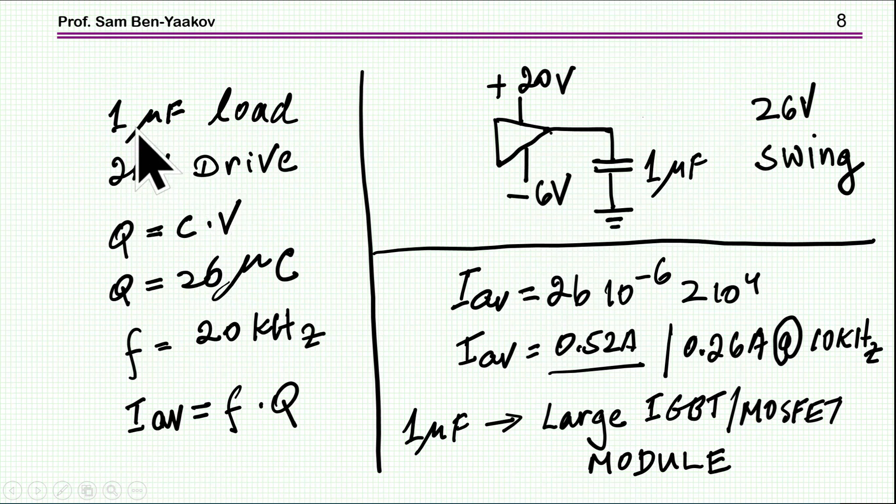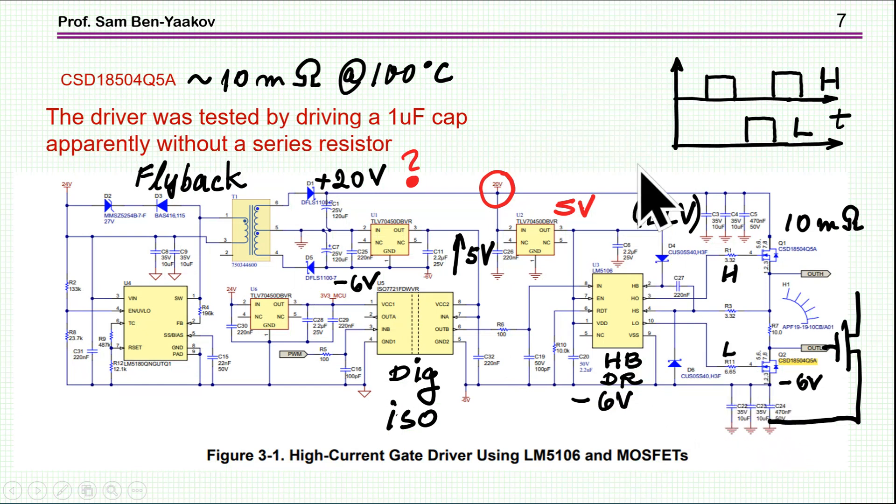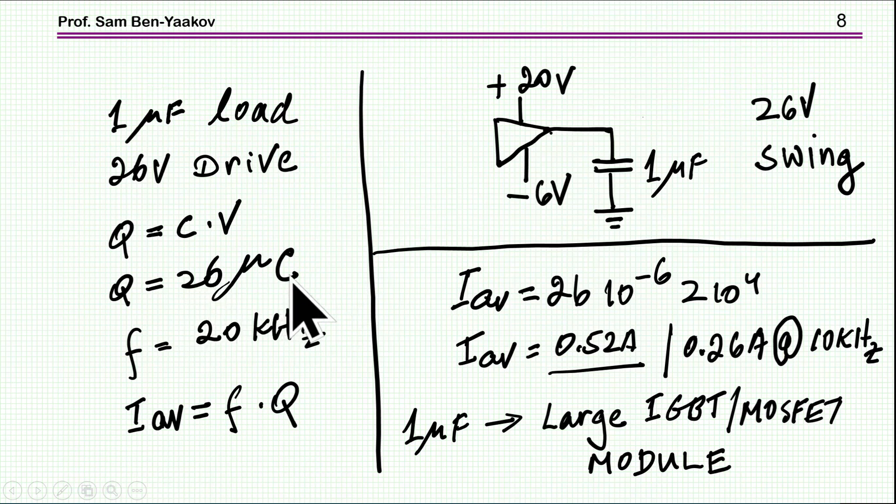So if I do a calculation of the charge for this 1 microfarad capacitor load, which is driven the swing of 26 volt, that's minus 6 here and plus 20 here, I find that it is 26 microcoulomb. And if I'm assuming 20 kilohertz, then the average current that will go from the power supply will be like 0.5 amp. If I assume at 10 kilohertz, then it will be 0.26. This will be for high power. I may wish to go to a lower frequency.